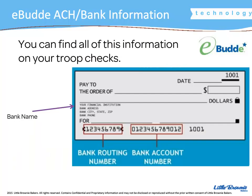If you're not sure how to find your routing number and account number, it is on your troop checks or you can ask your bank. We do need to make sure that we have this in eBuddy from each troop who is going to be participating in ACH. This is to assist us in verifying the account and routing numbers.